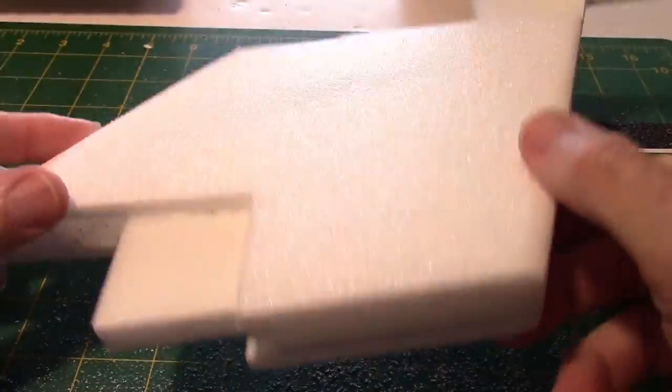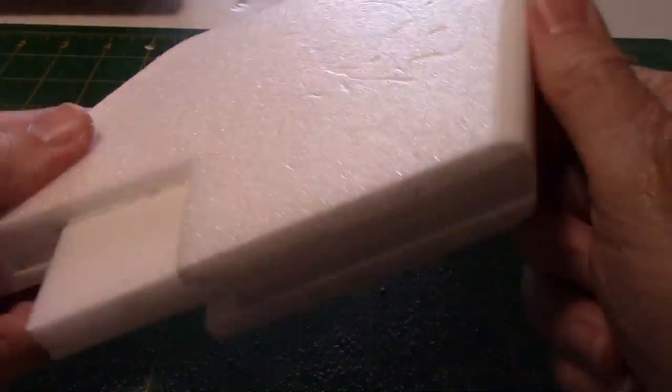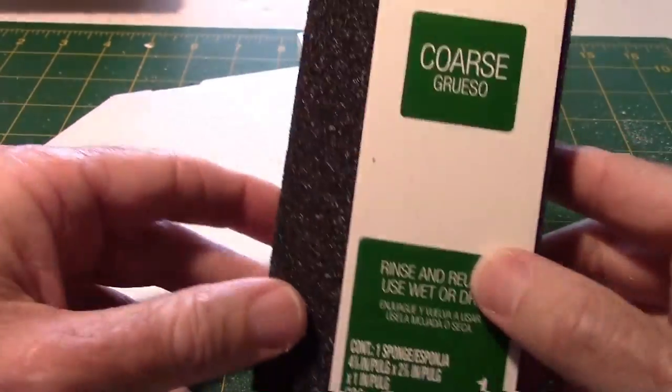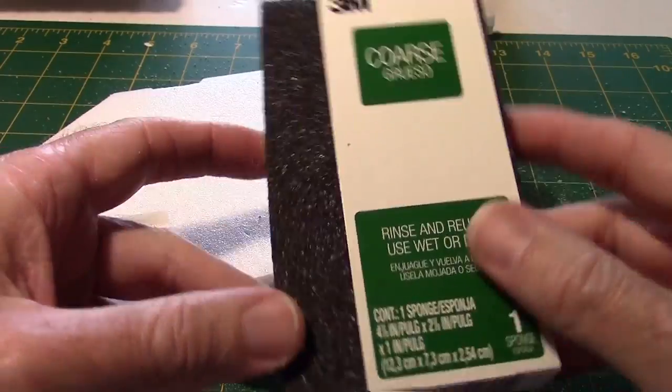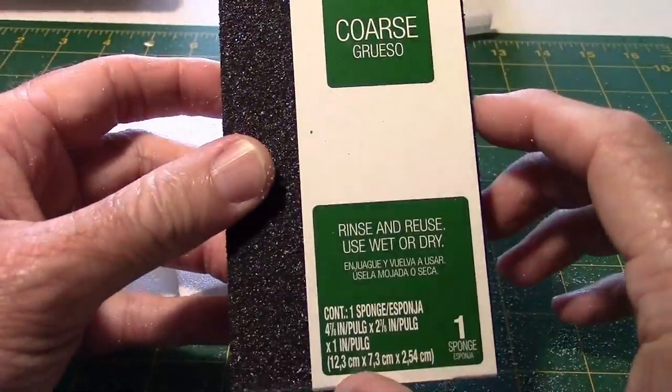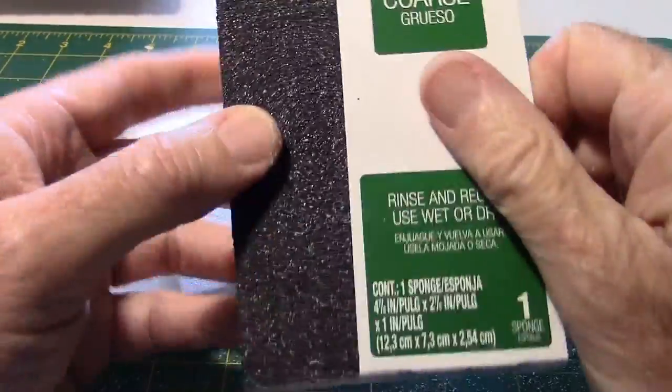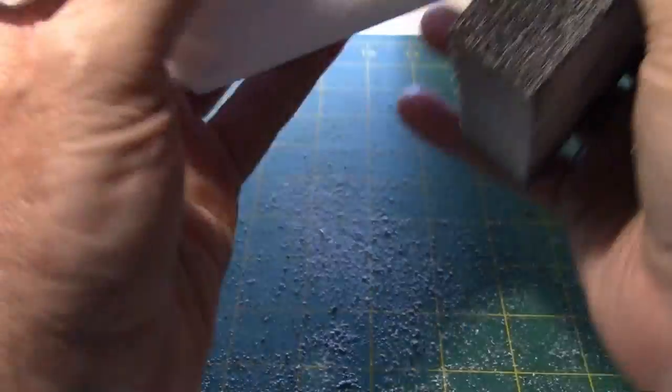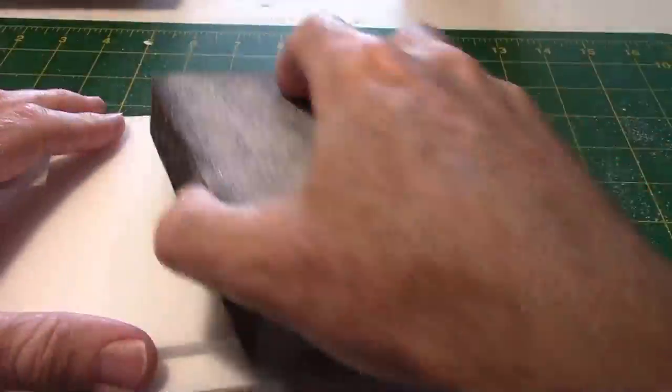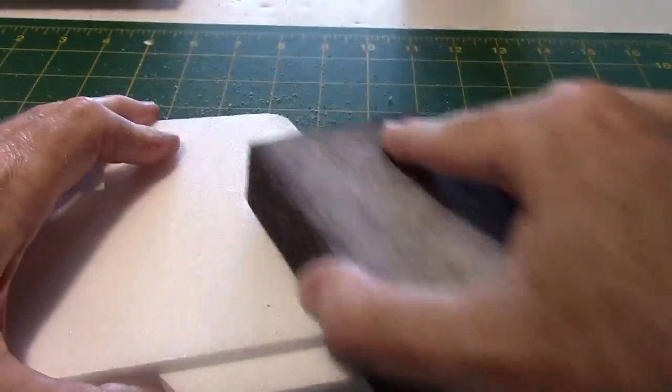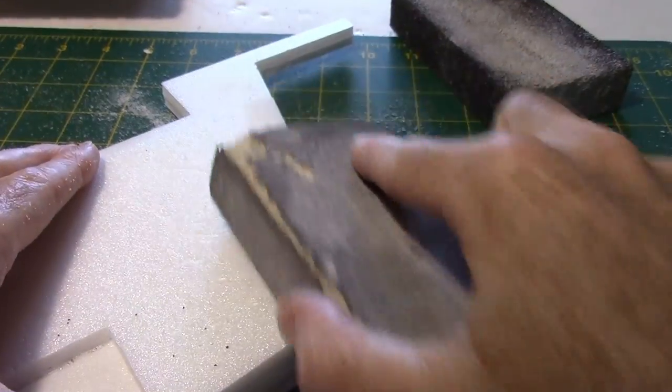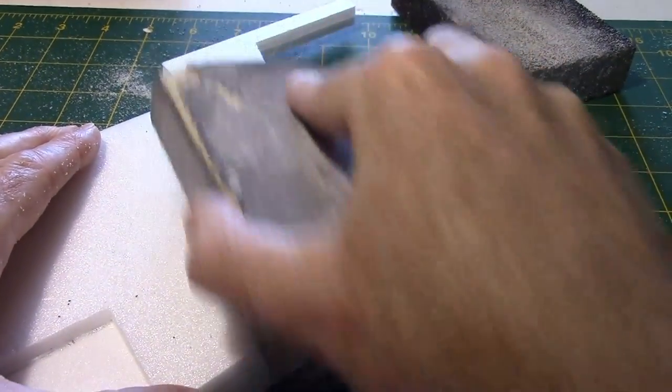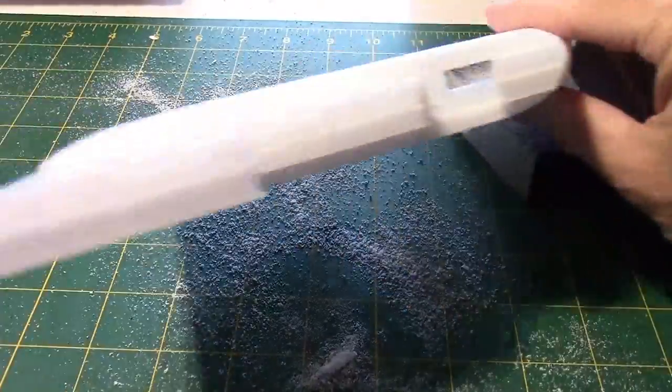So the 3M77 is dry now, and I'm just sanding the pedestal using one of these coarse sanding blocks from the hardware. This came from Lowe's, and they had fine, medium, and coarse. So I got coarse. I don't know what grit it is, but I think it's probably somewhere around 150 grit. And I'm just rounding the corners. And then you can use a finer grit to just polish it a little bit. And that's about it on that piece.